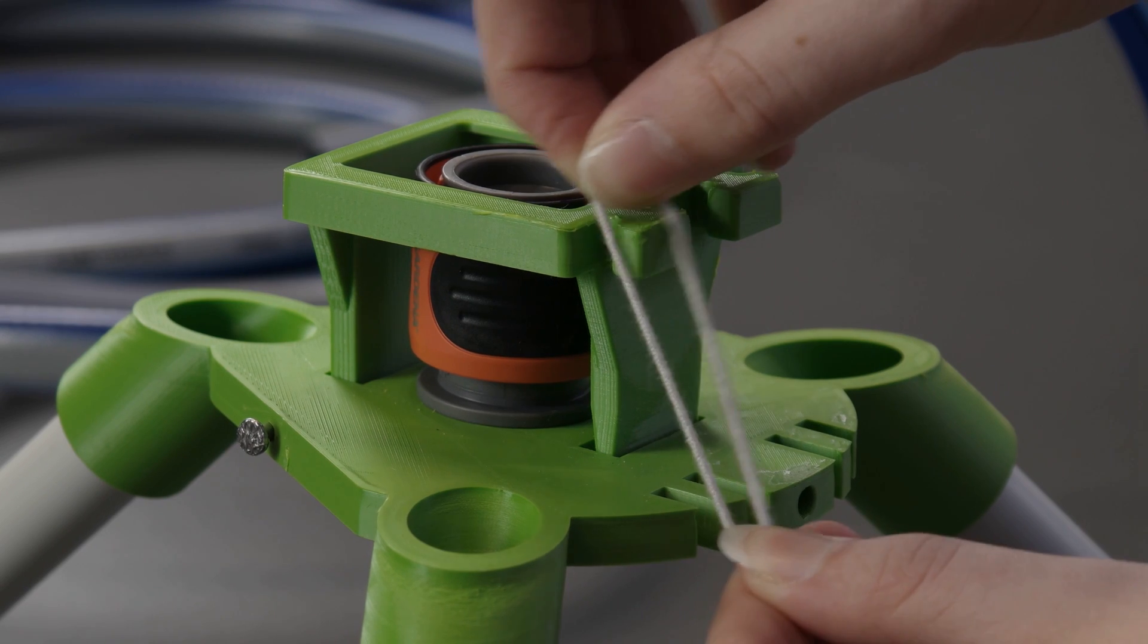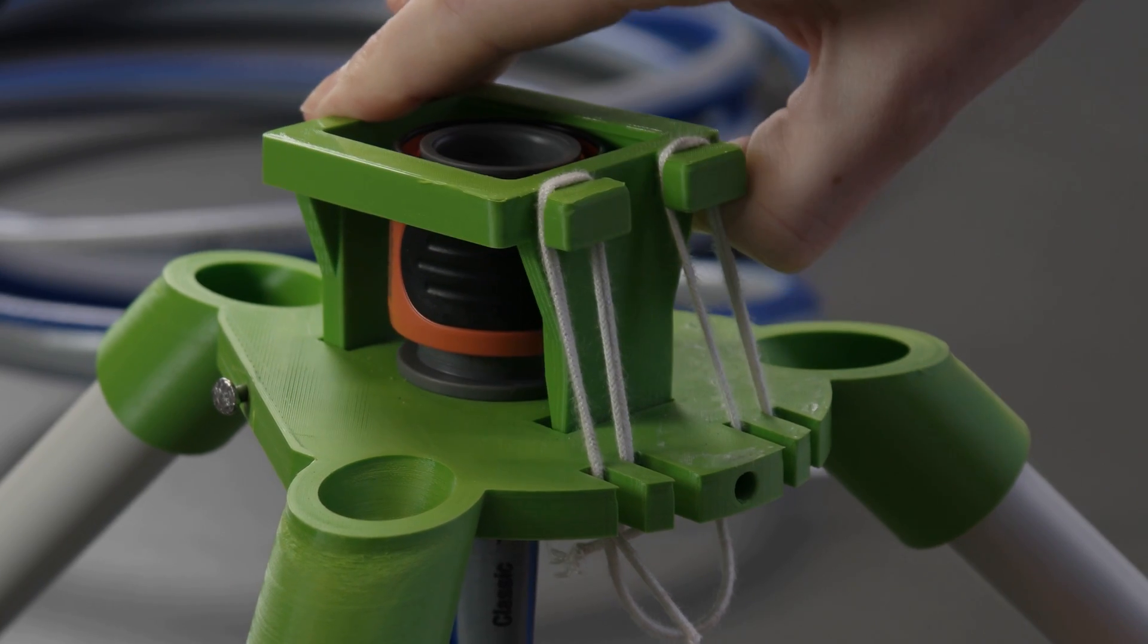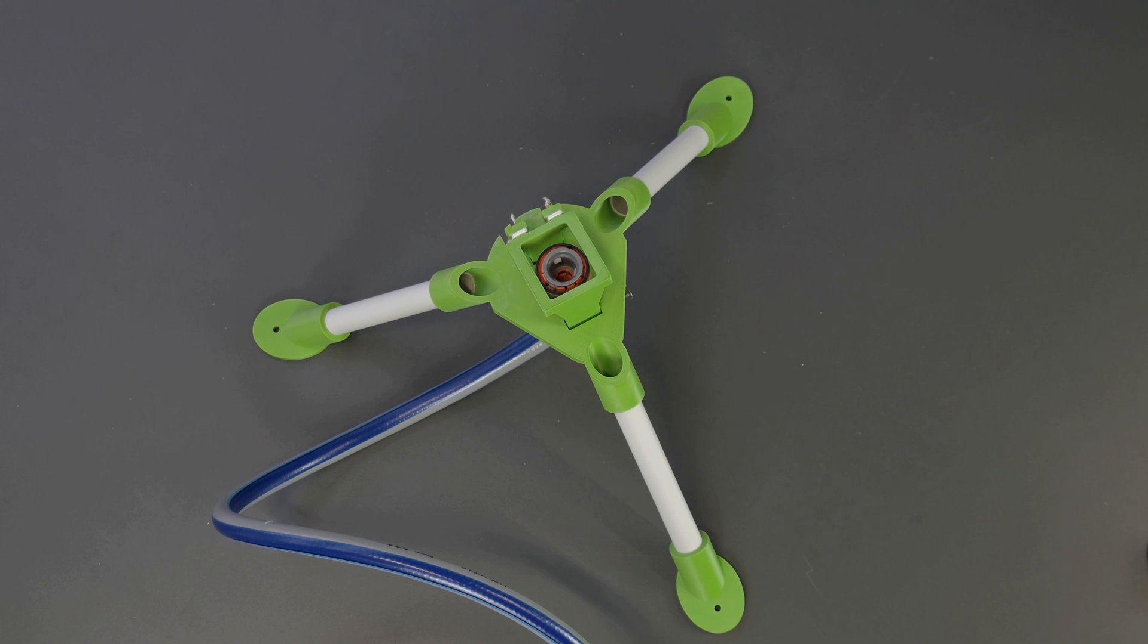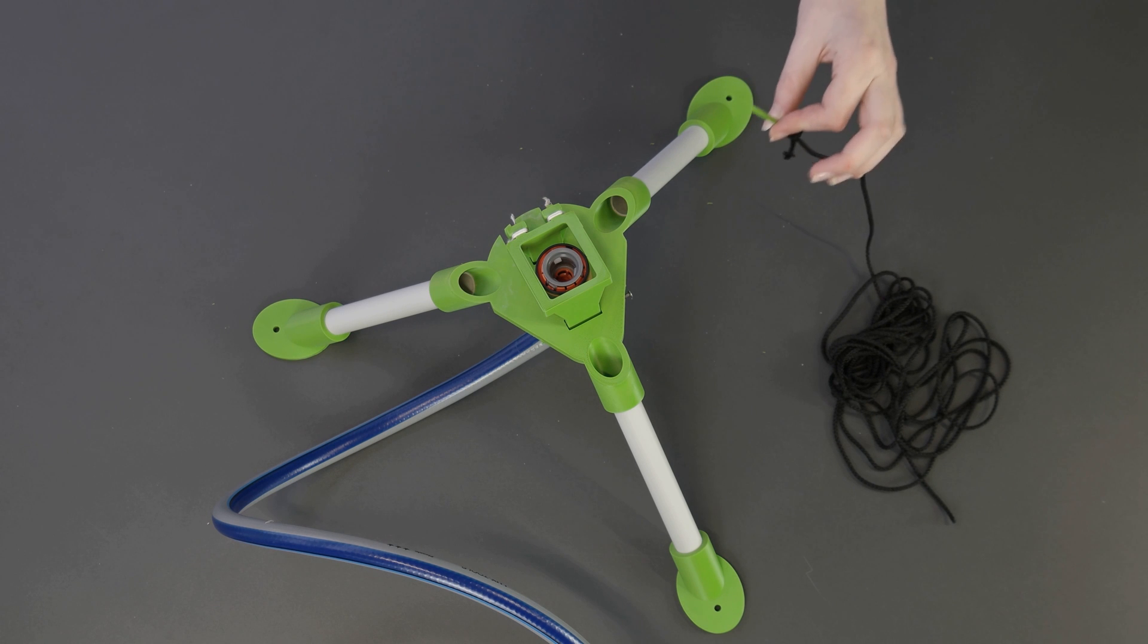A strong rubber band can now be used to pull the collar of the garden hose coupling down. But since we want to prevent this from happening until launch, we put a little splint into the launcher, which is connected to a cord.